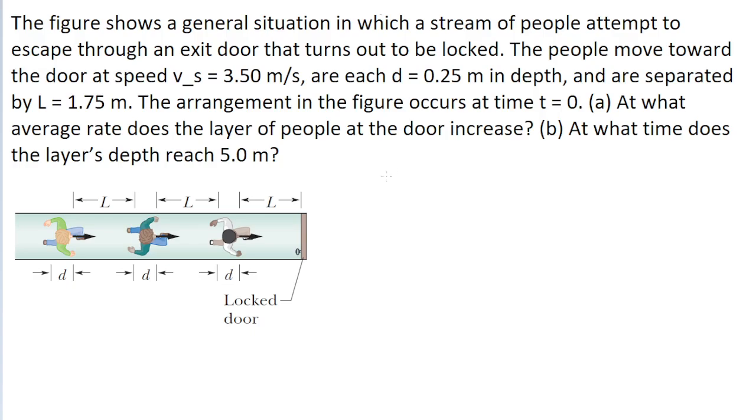First off, the problem tells us a variable V sub S, and the problem tells us that V sub S is the speed at which people are moving toward the door. So using our typical speed formula, we know that this is the speed at which a person can travel the distance L to the door. So V sub S is equal to L divided by whatever the amount of time it is that it takes for someone to reach that door. The problem actually gives us both the value for L and the value for V sub S.